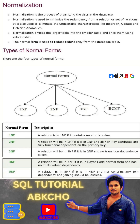There are several types of normalization, each representing a different level of organization. The first one is First Normal Form (1NF), which ensures that each table cell contains a single value and each record is unique.